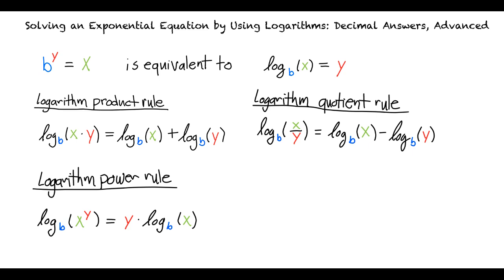The logarithm product rule says that the base b logarithm of x times y is equal to the base b logarithm of x plus the base b logarithm of y.